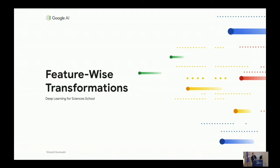This lecture is about feature-wise transformations. As you'll get to see, they're very simple and effective in modulating computation in a neural network. I'd like to be interactive, so if you have any questions, please don't hesitate to interrupt. I do have some amount of material, so I might stop questions at some point, but I will be available during the coffee break for further questions.